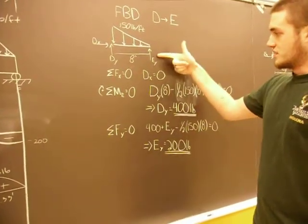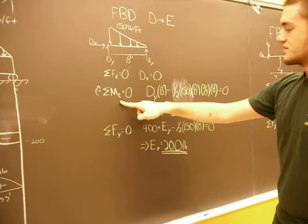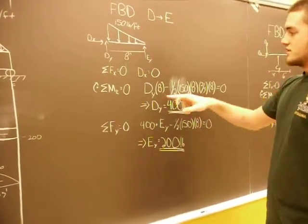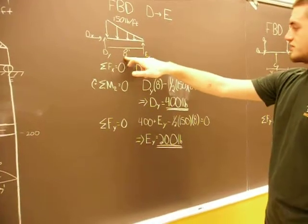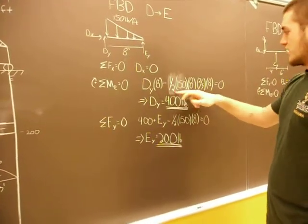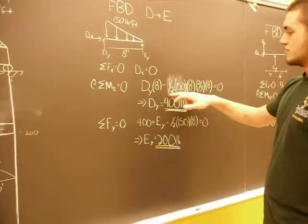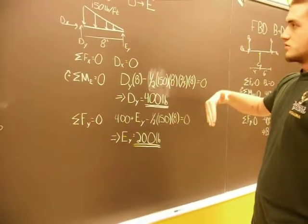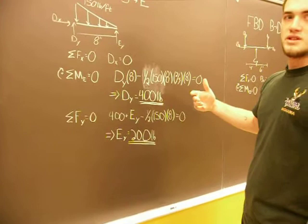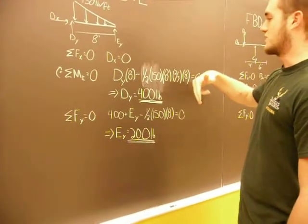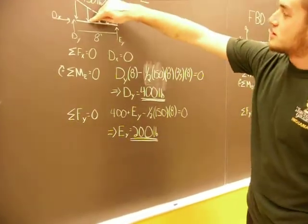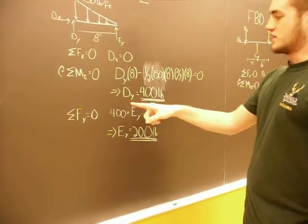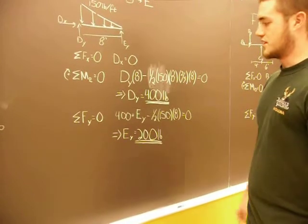Next I did moments from E. So moments from E equals zero. Clockwise is positive. You got your DY times your 8 feet. And you got your triangular loading, which is your area. One half times 150 times 8 times the force acting down here, which is two thirds times 8. Figure that out. It comes to be DY equals 400 pounds.